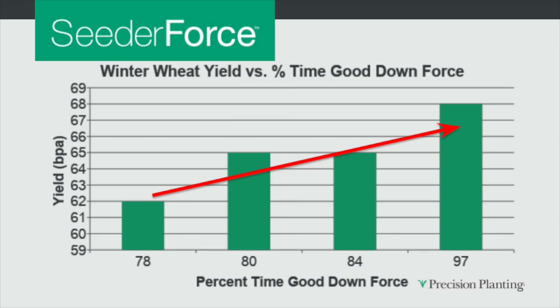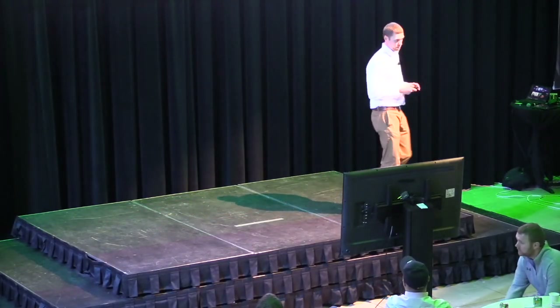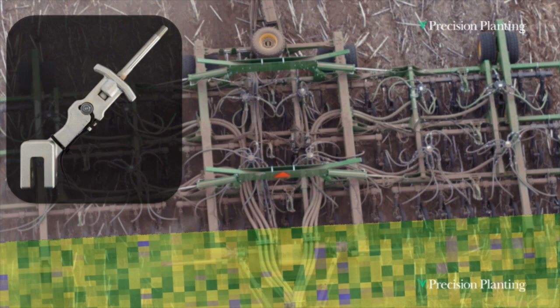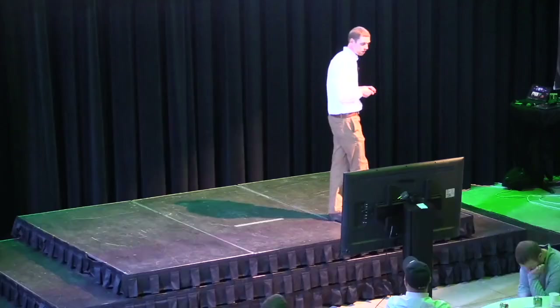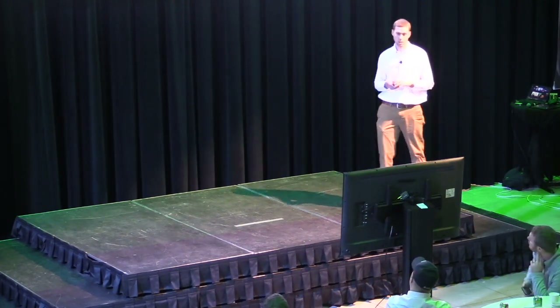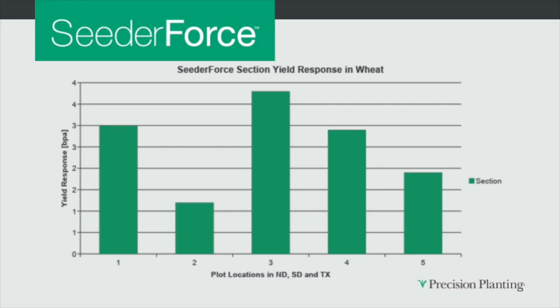Are you okay with wasting 39% of your seed inputs? Soybean seed is expensive. Would you rather spend that money on a better downforce management system that lets you decrease your seeding rate while maintaining the same stand count? Cedar Force section can increase the time you're within the good downforce window by 20% — meaning for every 500 acres seeded, another 100 acres are planted correctly. As percent time in good downforce increases from 78% up to 97%, yield increases from 62 to 68 bushels per acre. Results from five locations in North Dakota, South Dakota, and Texas showed Cedar Force section had an average yield response of 2.6 bushels in winter wheat — and in some cases, significantly greater.